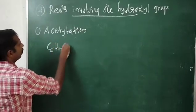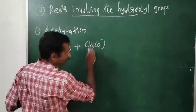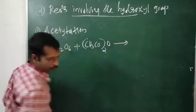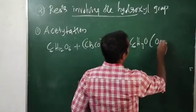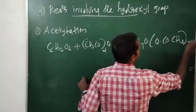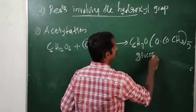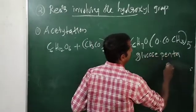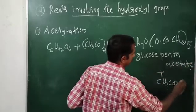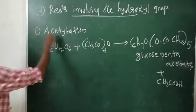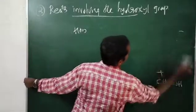Acetylation: glucose (C6H12O6) is treated with acetic anhydride. We get glucose penta-acetate plus acetic acid (CH3COOH). This is the acetylation reaction with acetic anhydride.